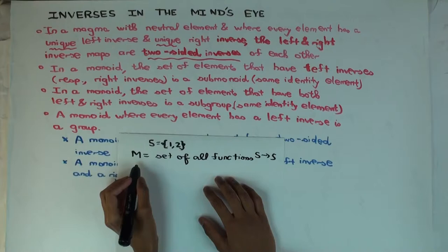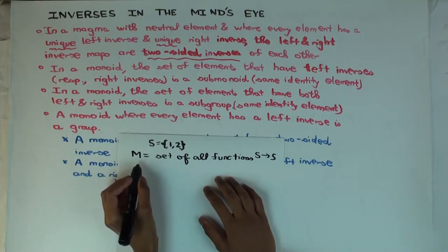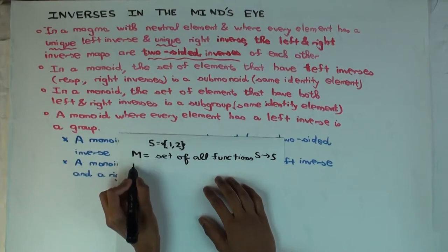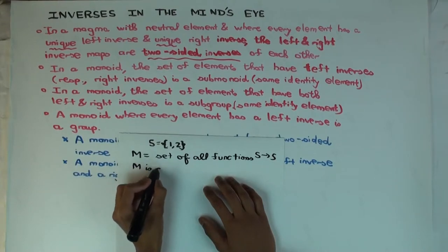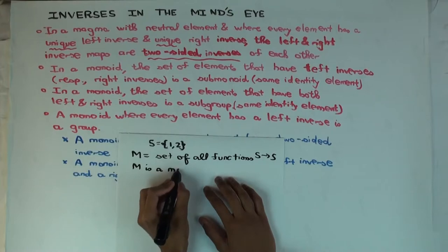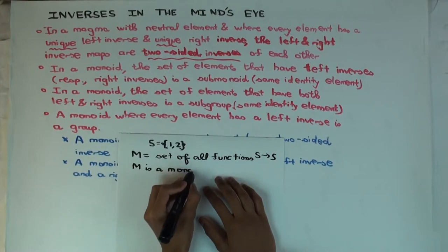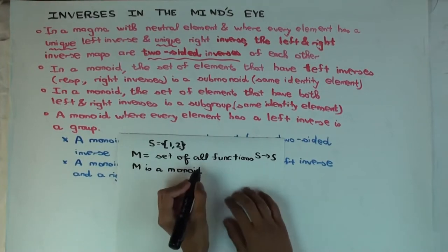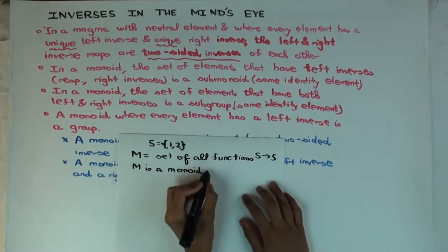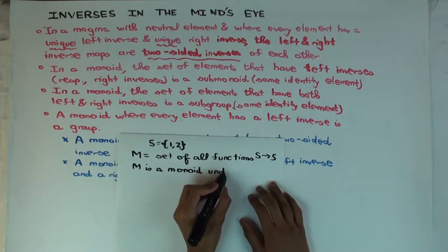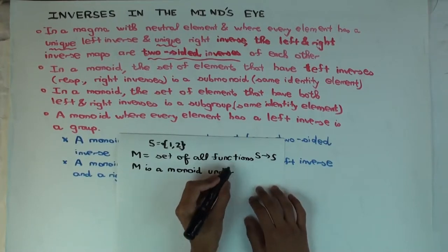Is M a monoid under composition? Yes it is. Define the multiplication on M as function composition. You can compose two functions from S to S and you'll still get a function from S to S. The identity element of this monoid is the identity function.